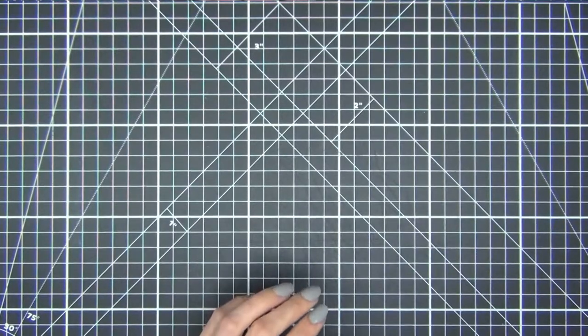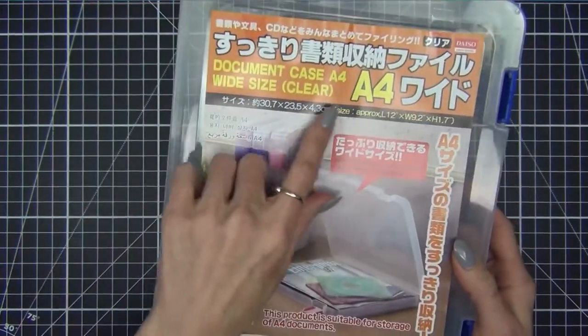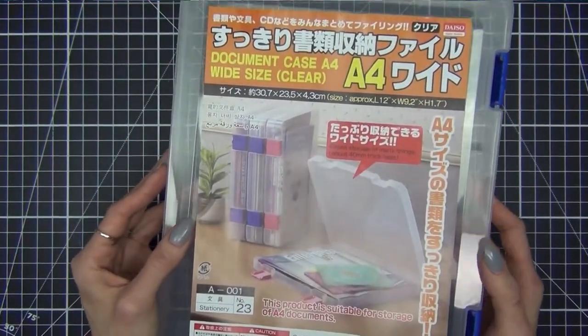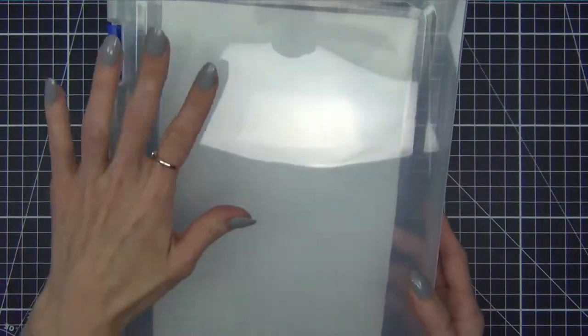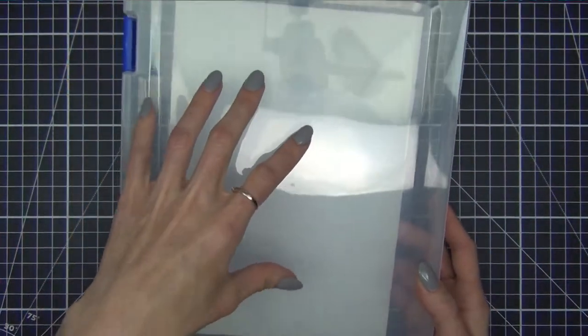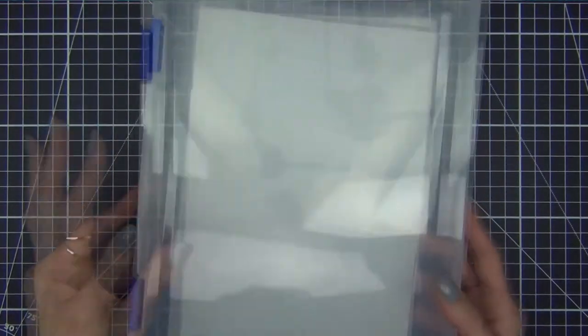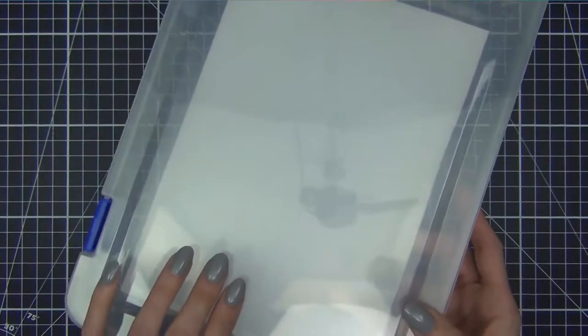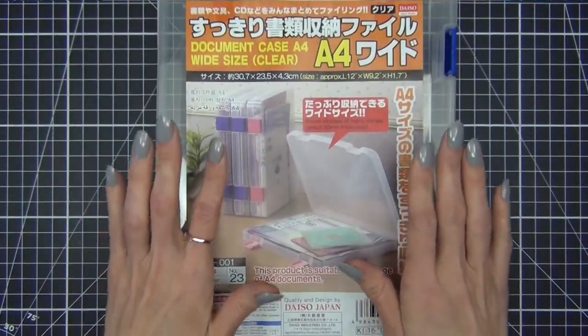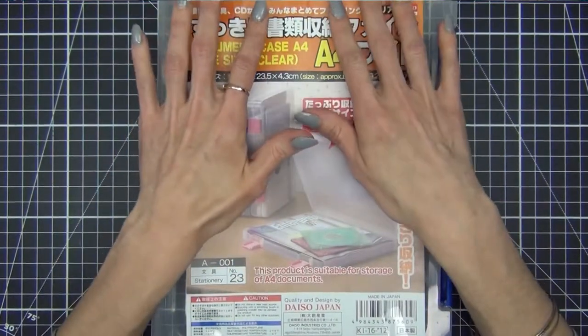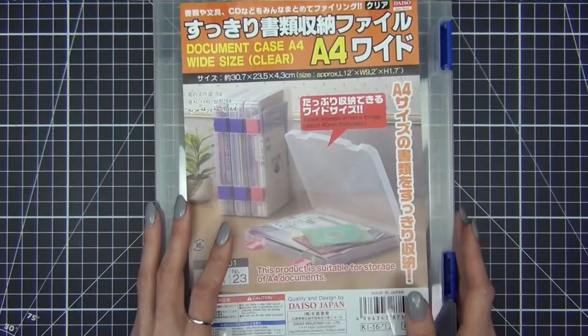So my number one thing that I always get are these A4 size document cases. These are awesome. I put projects in here that I am still working on. I put scrap paper in there. I put my fancier cardstocks like my 110 and my Neenah cardstocks. I have an Etsy shop, so a lot of my finished products that I have packaged up and ready to go, I keep in here because it protects it.